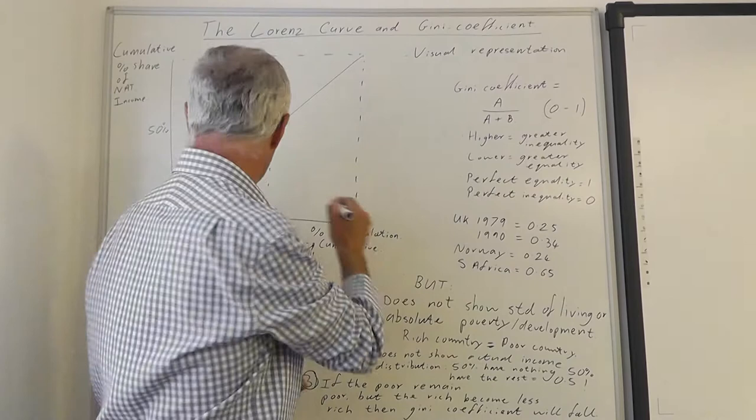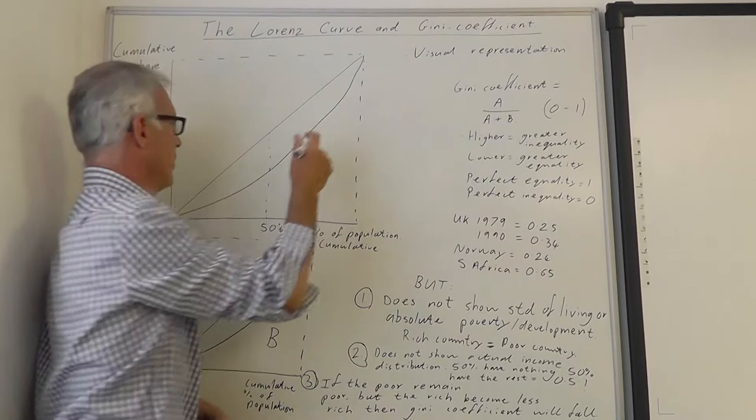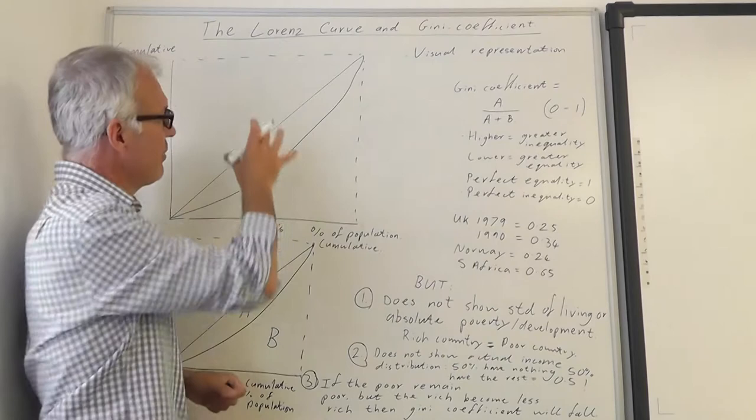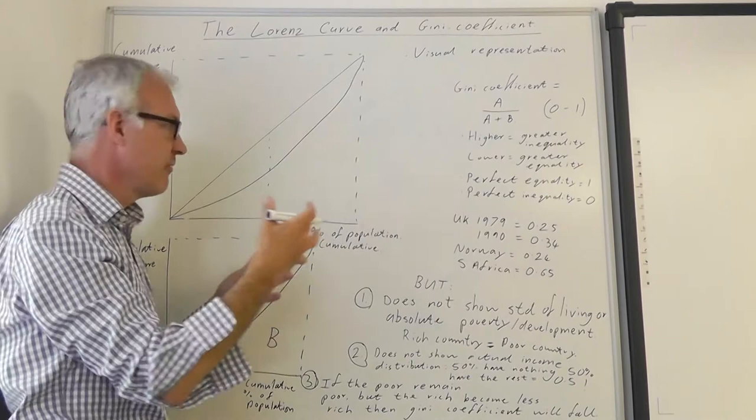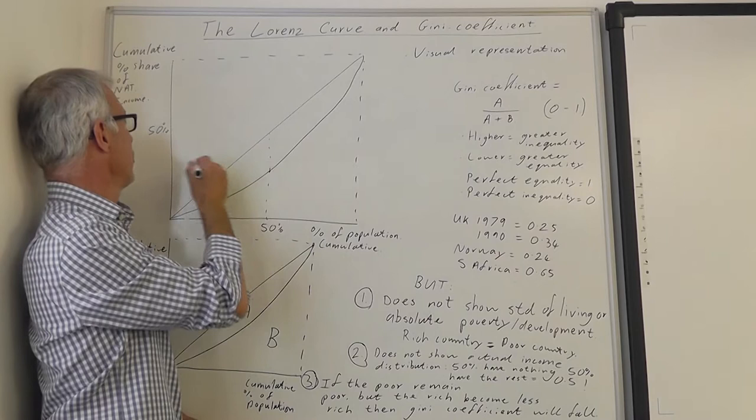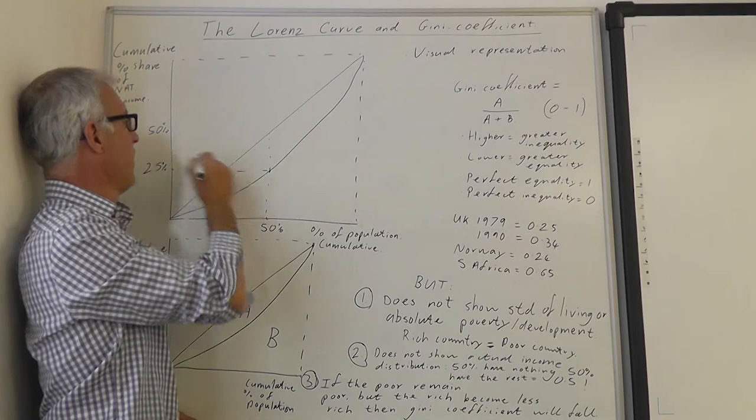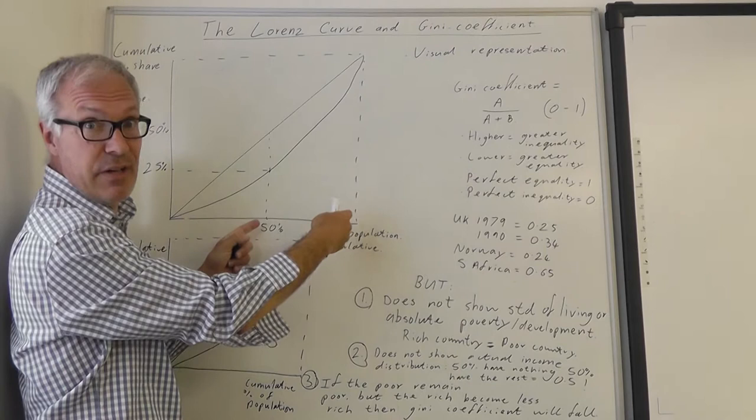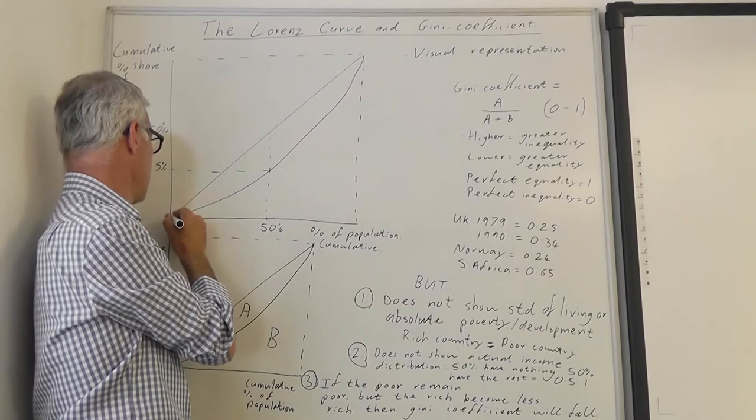If we draw the Lorenz curve, it would look something like this. It hangs below the 45 degree line and the further it hangs below, the greater the level of inequality. We see here that the first 50% of the population probably have about 25% of national income and the other lot have the rest, 75%. So it's a pretty unequal society.